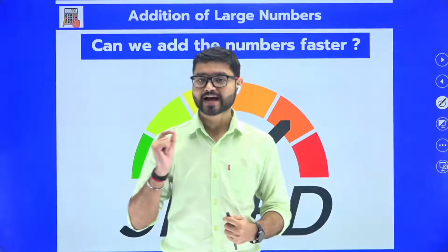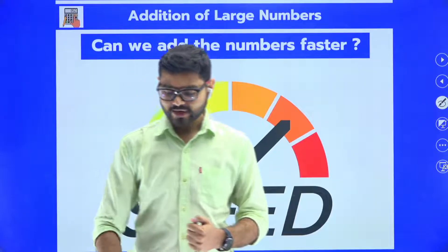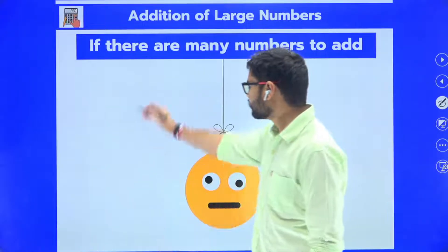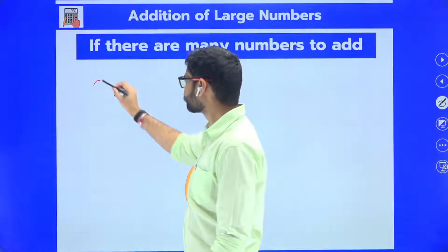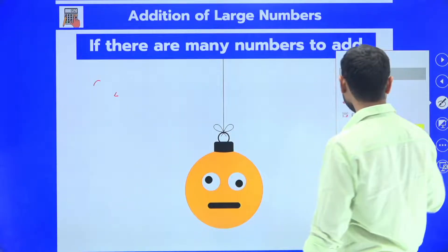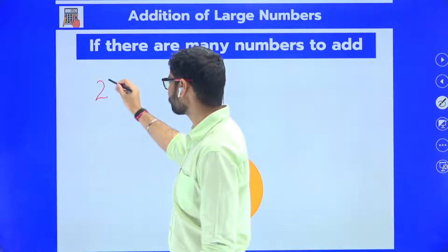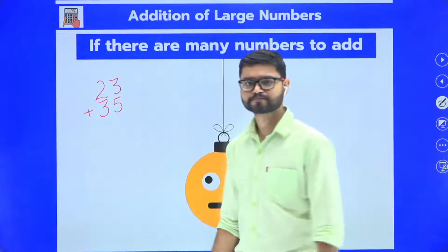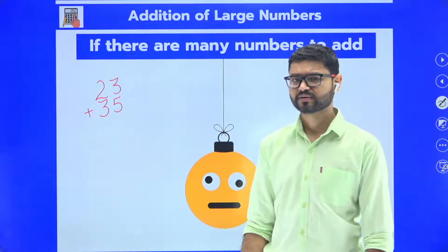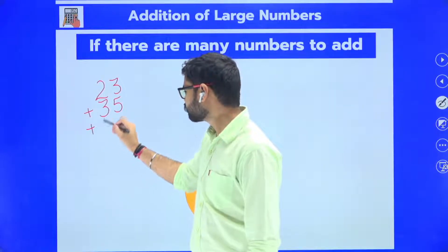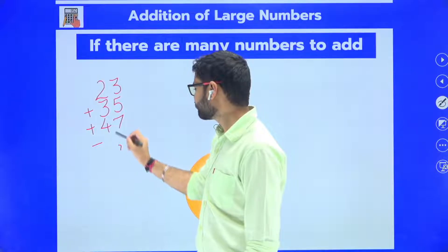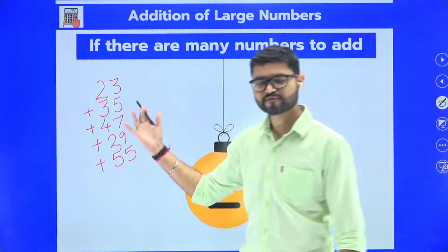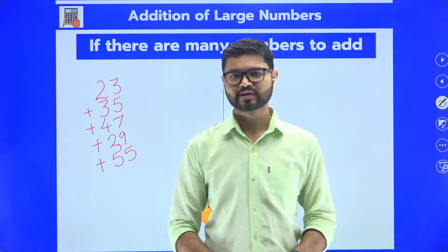Before I really start, I want you to give this a thought. If I ask you to add numbers 23 and 35, we have two numbers — of course you can do that addition. Now if I give you five numbers to add, can you add those five numbers? Of course you can add them.